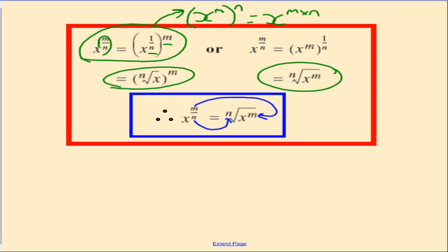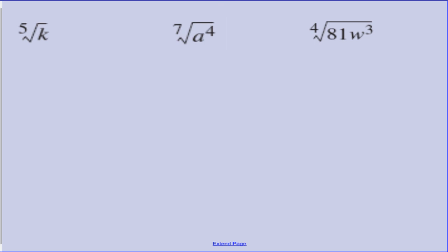Some examples. Here we have the fifth root of K. K remains K with a fractional power. Because K has no power under the root sign, we assume there is a 1 there — so 1 is the numerator and 5 is the denominator, giving K to the power of 1 over 5. In the next example, the seventh root of A to the power of 4: the power of A is 4, so that is our numerator, and the power of the root sign is 7, so that becomes the denominator, giving A to the power of 4 over 7.